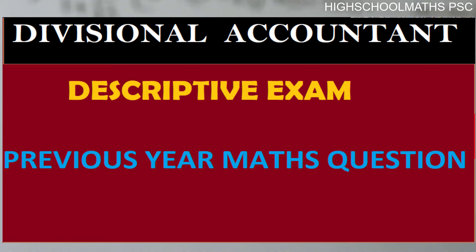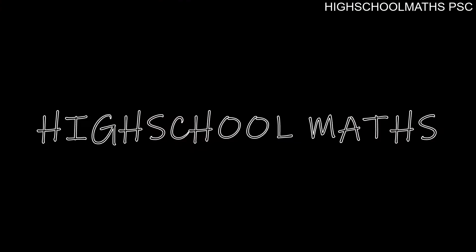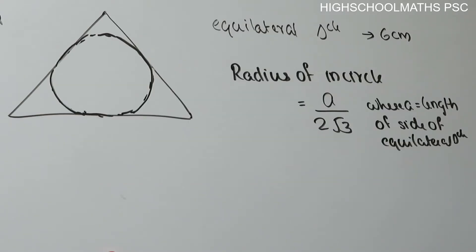What is the question? Find the radius of the circle inscribed in an equilateral triangle of side 6 cm.